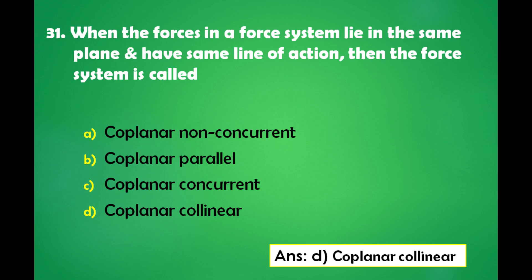31st question. When the forces in a force system lie in the same plane and have the same line of action, then the force system is called: a) coplanar non-concurrent, b) coplanar parallel, c) coplanar concurrent, d) coplanar collinear. The answer is: coplanar collinear.